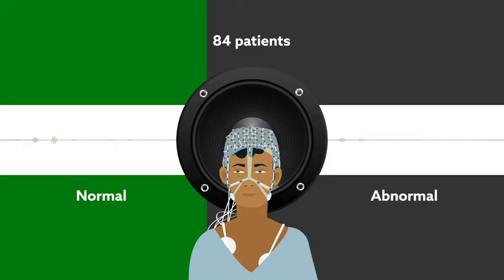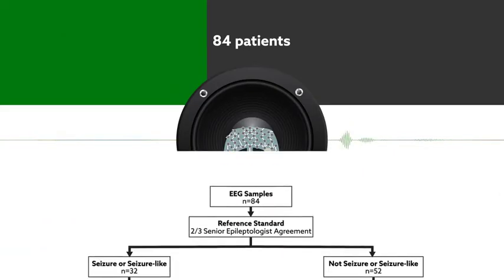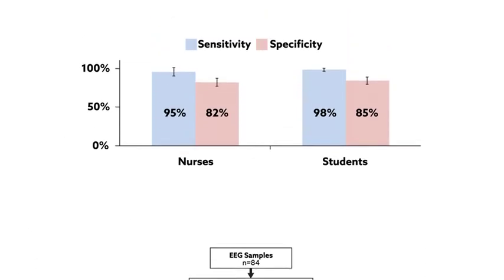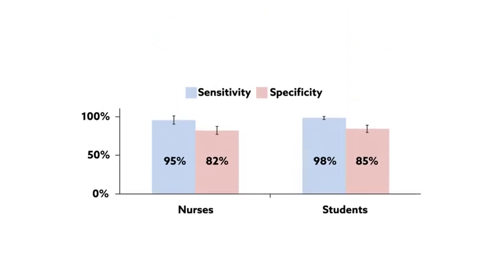Neurologists specialized in reading EEGs reviewed visual displays of each recording to identify seizures and other abnormal activity. Then medical students and nurses classified each audio recording as normal or seizure-like. Using the sound bites, the untrained individuals recognized seizures 97% of the time, showing equal or better performance than the neurologists using the visual data.